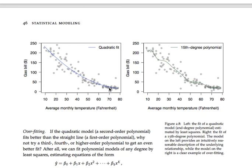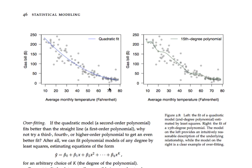A natural question is: if adding a second power of temperature fit better than a straight line, why not add a third, fourth, or even 15 powers of x? That gives us a k-degree polynomial, where k is the maximum power. In the quadratic case k equals 2, but there's no logical upper bound to the number of powers you add. Here's what you get fitting a 15th degree polynomial — a constant term plus 15 powers of x.